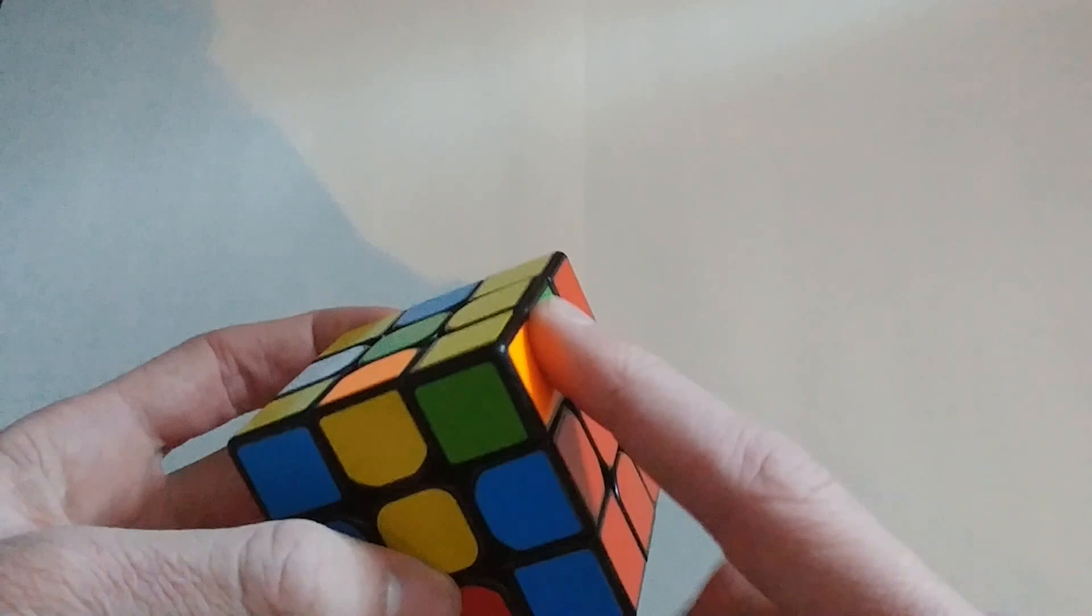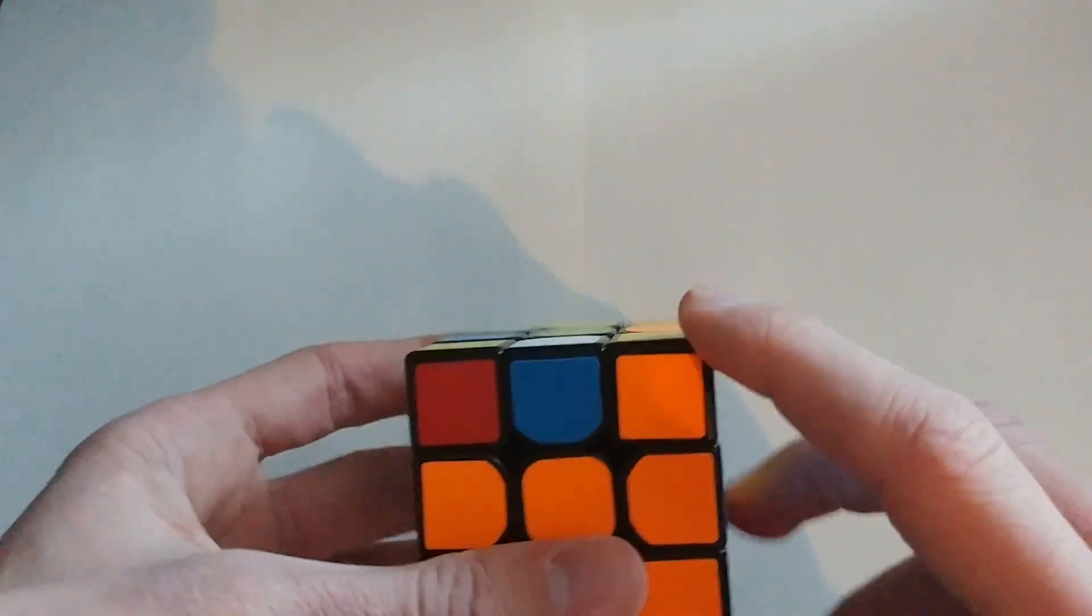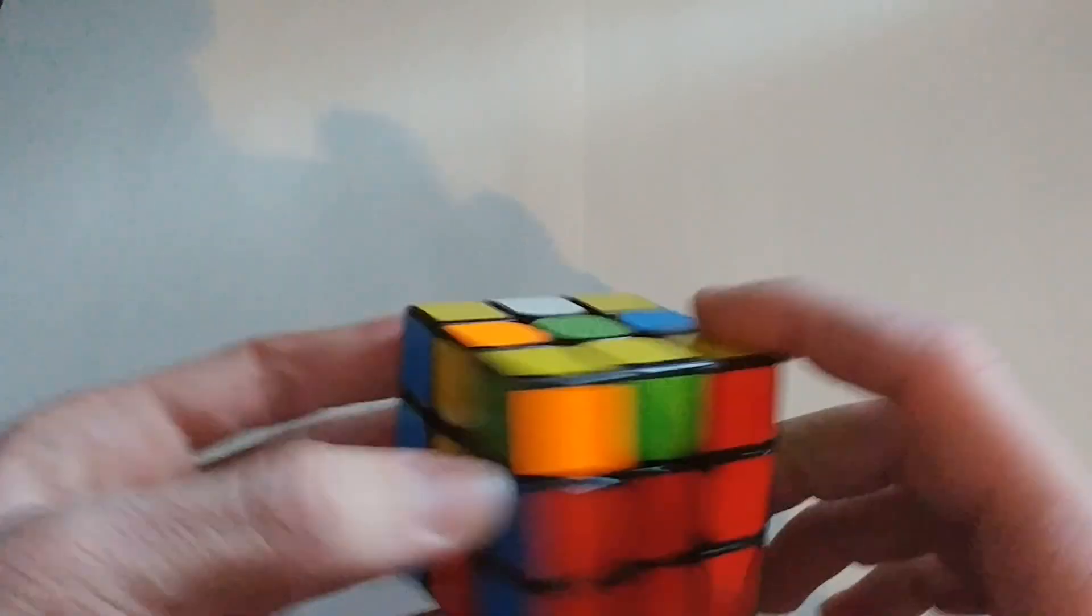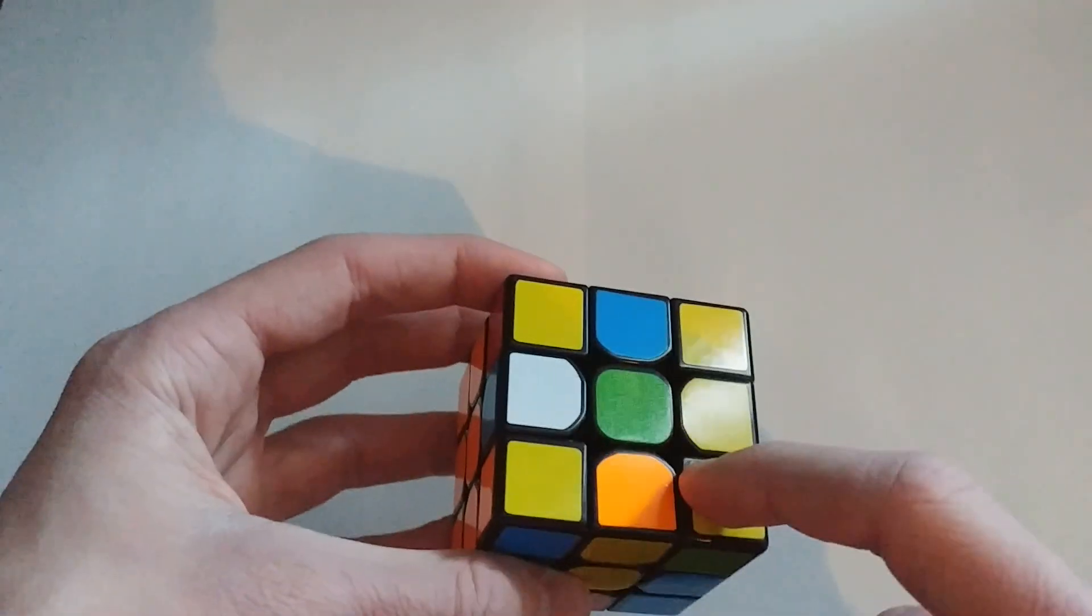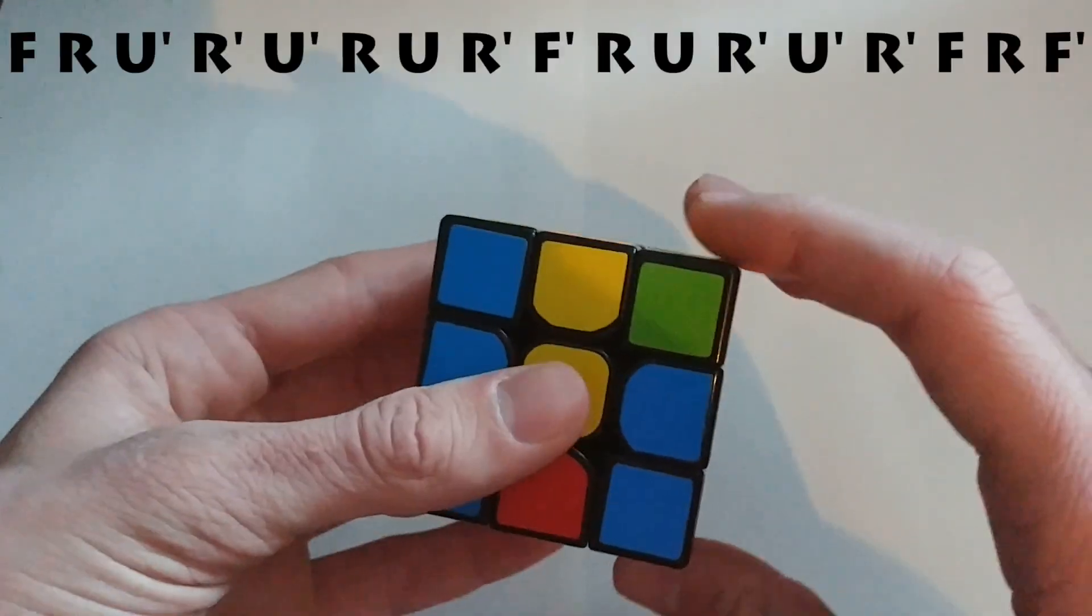I look, I see I have this piece is incorrect, this is correct, incorrect, and correct. So I have to swap these two diagonal pieces, and you're going to use this algorithm.